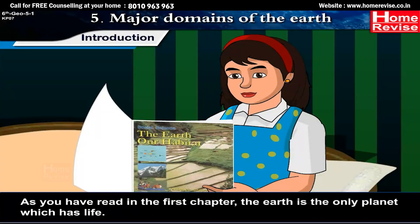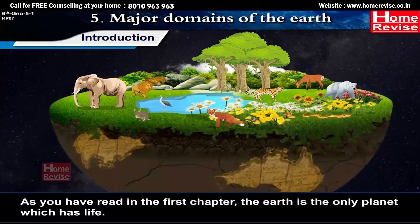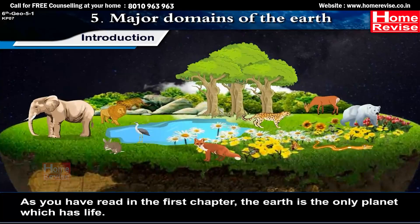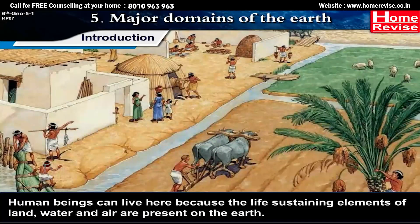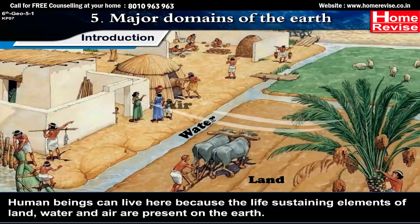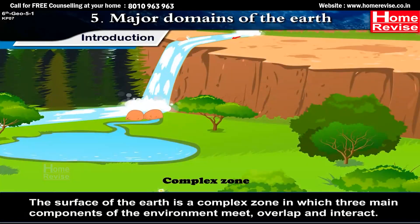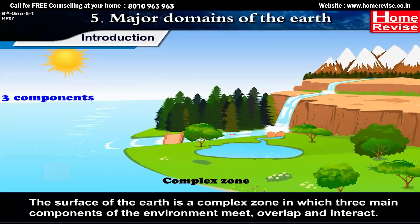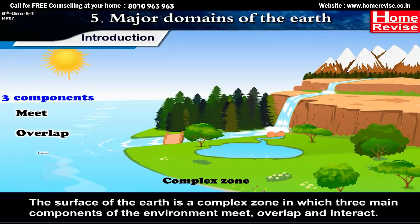As you have read in the first chapter, the Earth is the only planet which has life. Human beings can live here because the life-sustaining elements of land, water and air are present on the Earth. The surface of the Earth is a complex zone in which three main components of the environment meet, overlap and interact.